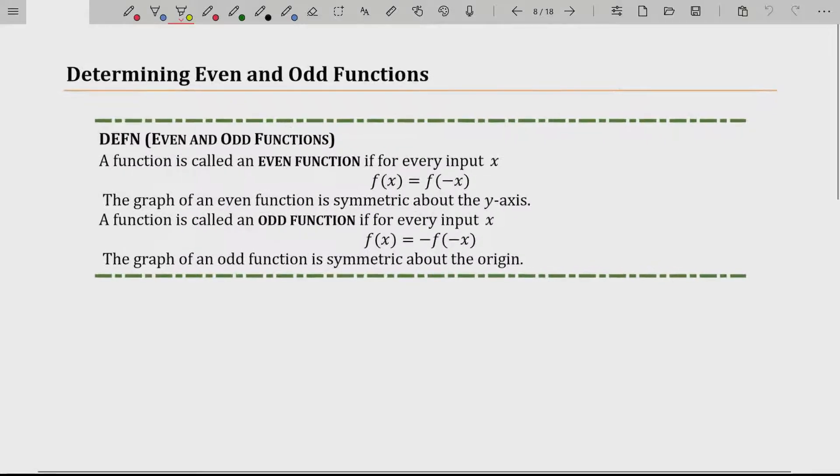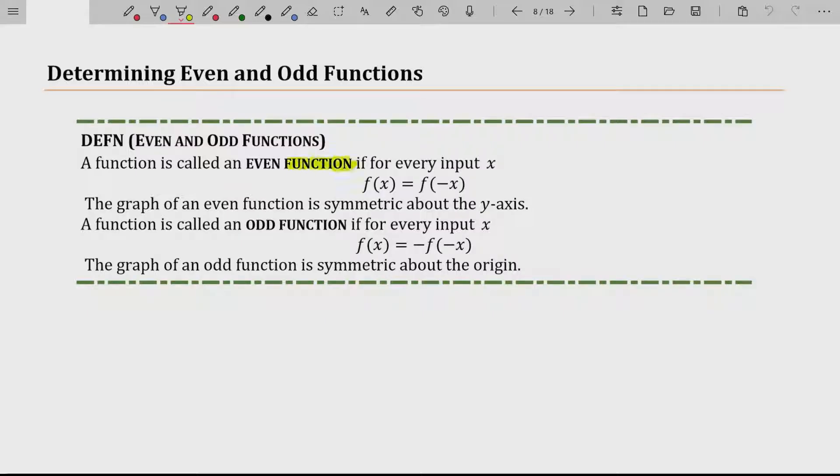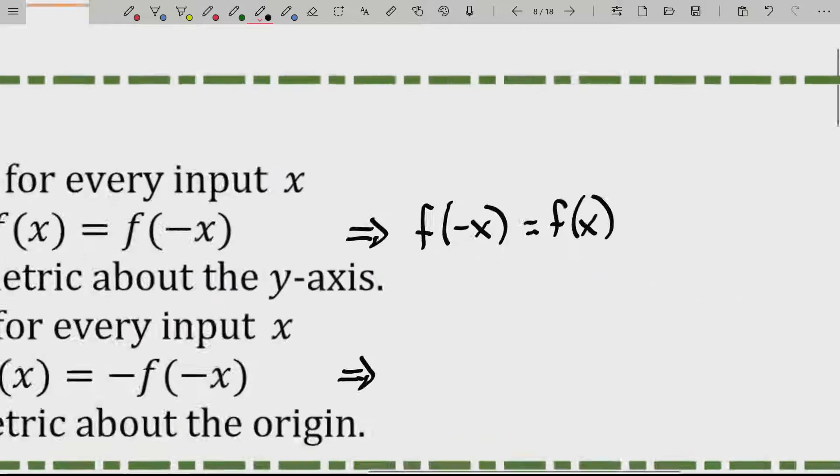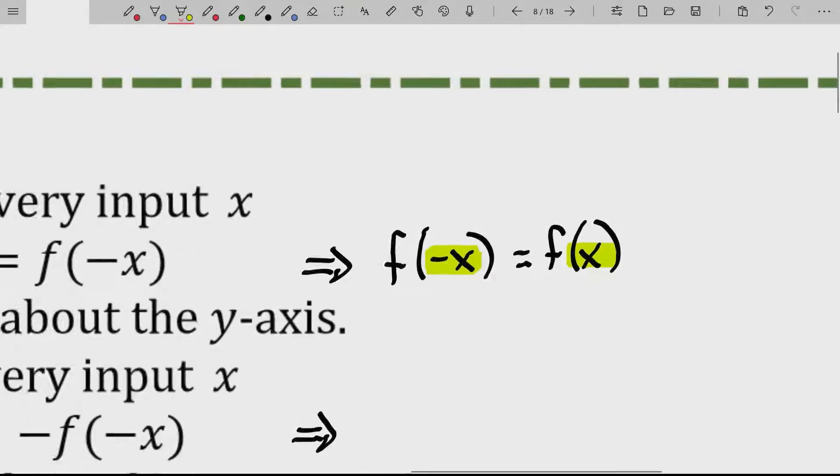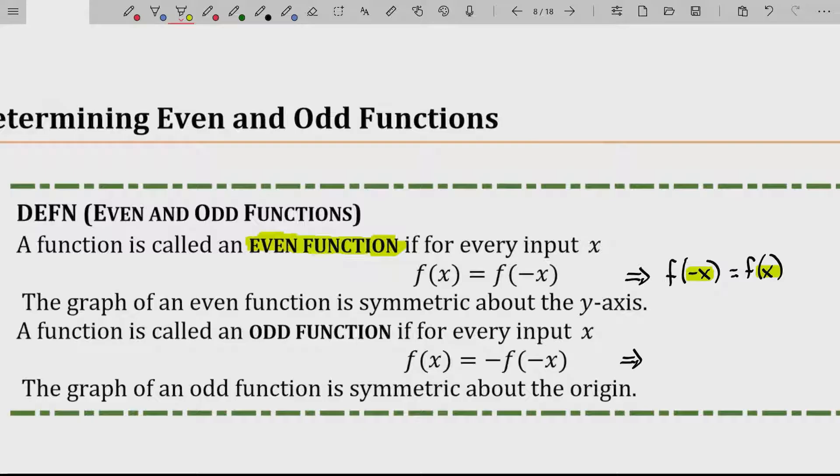So the very first thing we're going to review is an even function. A function is called an even function if for every input x, f of x is equal to f of negative x. So a lot of students see that and say, oh, you plug in negative x and it disappears. Actually, it should be written the other way, like f of negative x is equal to f of x. Most people do write it that way. You know a function's even if when you plug in the opposite of x, it's the same thing as had you just plugged in regular old x.